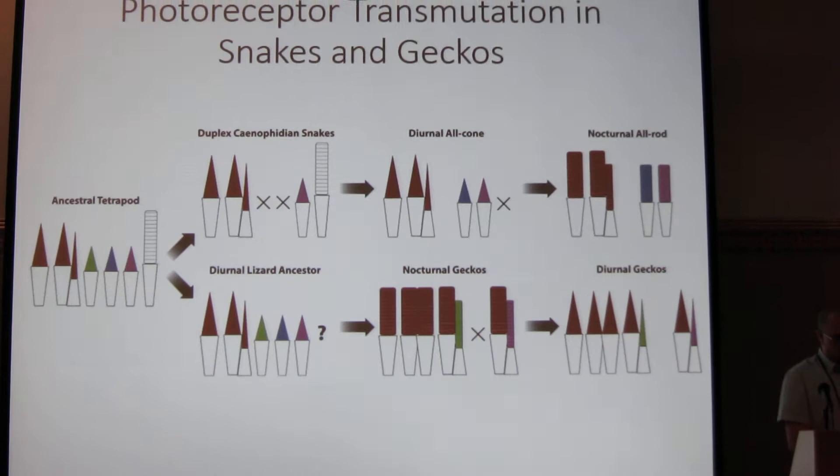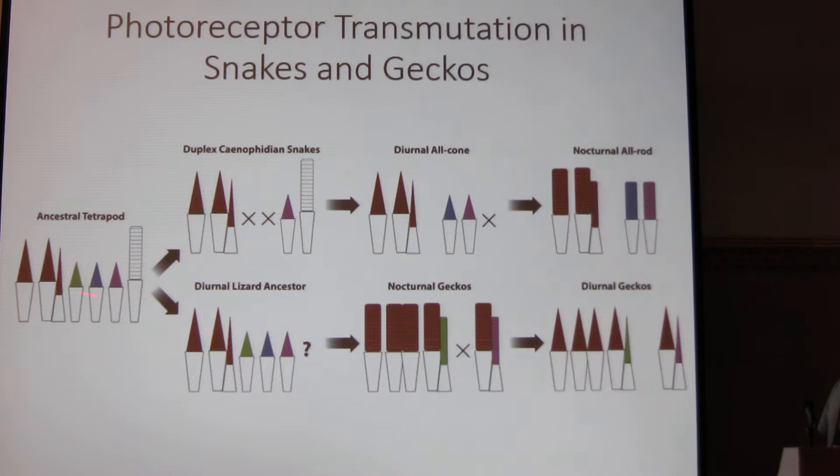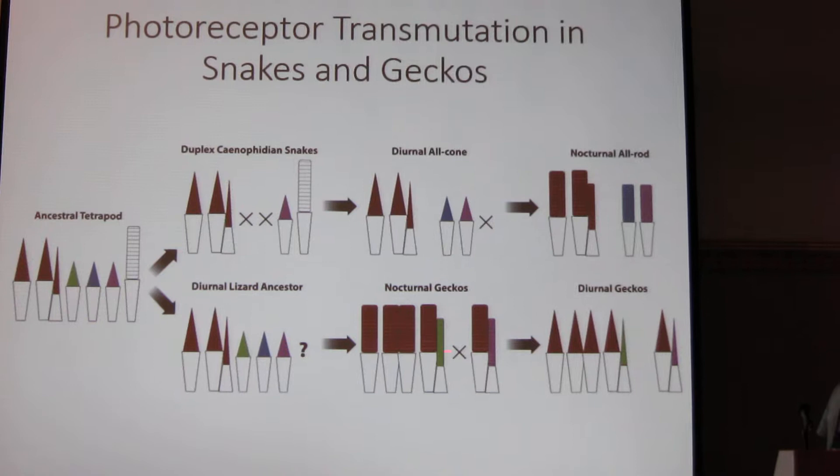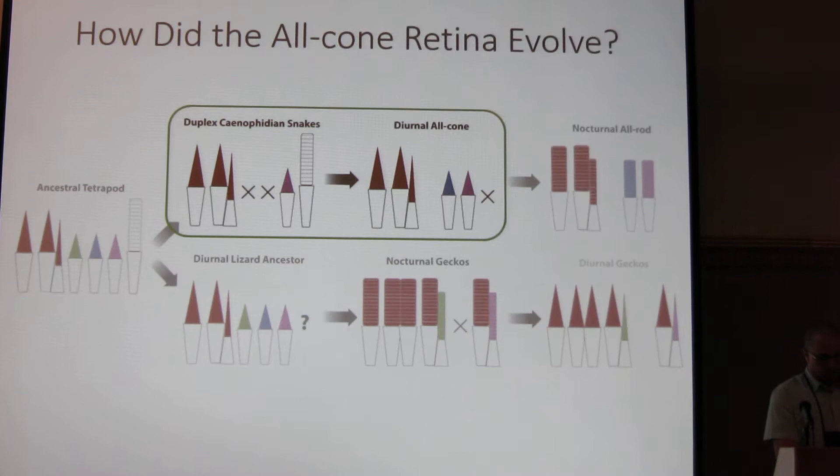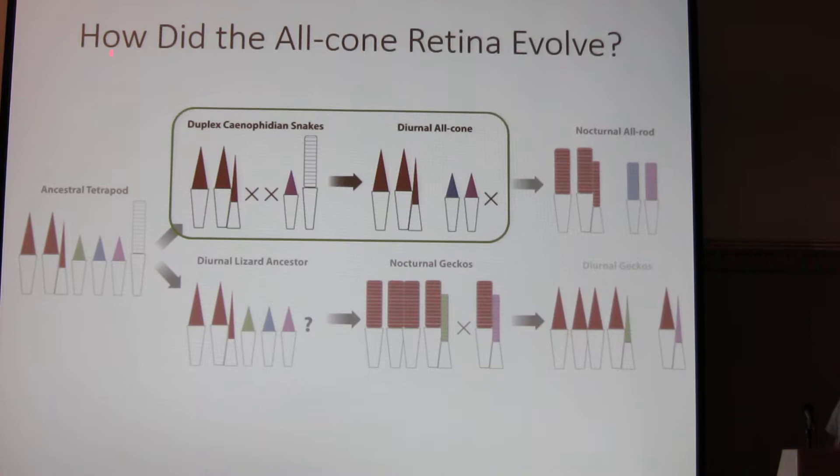When we break this down and look at it in a more schematic view that also takes into account the different visual pigments shown by the different colors, we can see that in both snakes and in geckos we have numerous losses of visual pigment genes, and this will become important in the evolution of the photoreceptors after transmutation. The first thing I would like to focus on is the evolution of the all-cone retina, and we're going to use the snakes to test this.